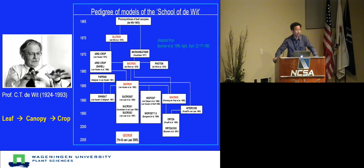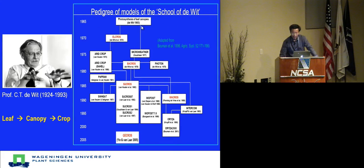Current crop modelers in the world were trained by him in the early days. Since his first publication in the 1960s, every five or six years we have published a new type of crop model, especially those ending with 'growth' — like yellow growth, black growth, silk growth, mark growth, and G-GLOSS nowadays.